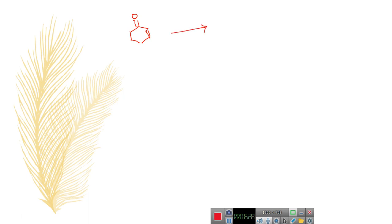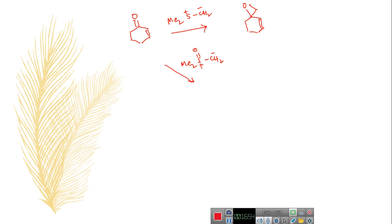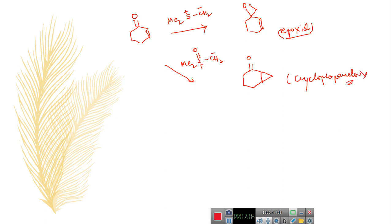Let us take an example: the treatment of cyclohexenone with two different types of ylides — dimethyl sulfonium methylide and dimethyl sulfoxonium methylide — produces different products. Treatment with dimethyl sulfonium methylide gives the epoxide product majorly. Treatment with dimethyl sulfoxonium methylide gives the 1,4-addition product, that means cyclopropanation. So in both cases you observe either epoxide formation or cyclopropanation.